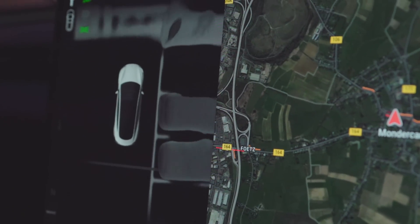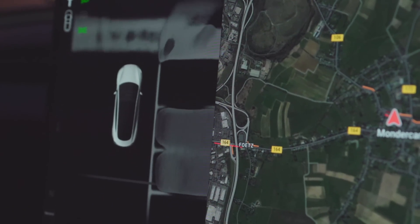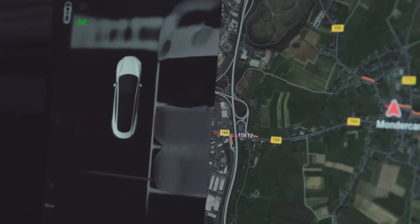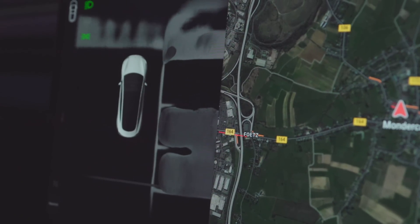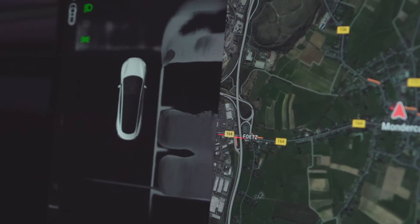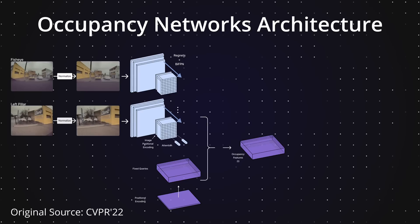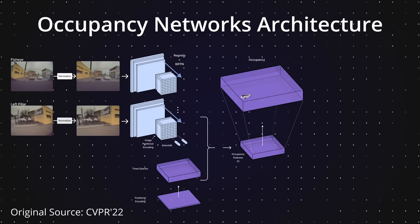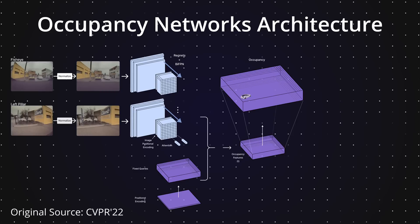However, given the computational complexity of generating high-dimensional features for every point in 3D space, Tesla employs a strategy of initially producing these features at a lower resolution and then using upsampling to increase the density and resolution of the occupancy data.